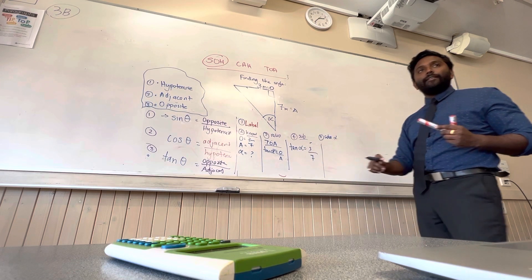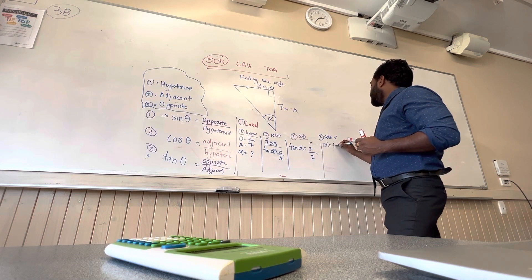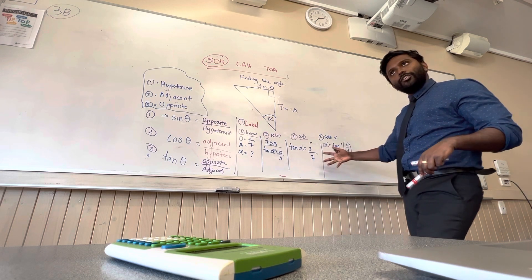To solve for alpha, we need to get rid of the tan. How do you get rid of tan? It's going to be tan inverse. Then you just enter that and you calculate it, and you should get your answer.